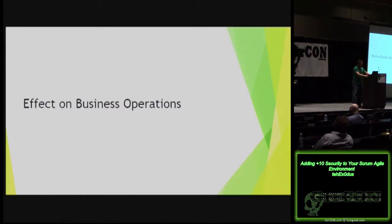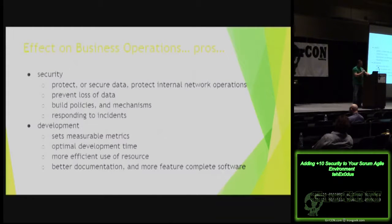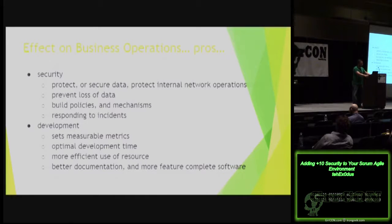What are the effects on business operations if development teams and security teams can't work together to achieve their goals? Security needs to protect the organization and development teams need to improve and modify current functionality — if they don't achieve this, it will affect business operations. Since security needs to protect the organization, it's going to protect data, finances, and daily operations — defining better policies, helping to educate people. Security is also going to help prevent data loss, possibly setting up disaster recovery plans, building better policies and mechanisms, hardening the shell outside of your business.